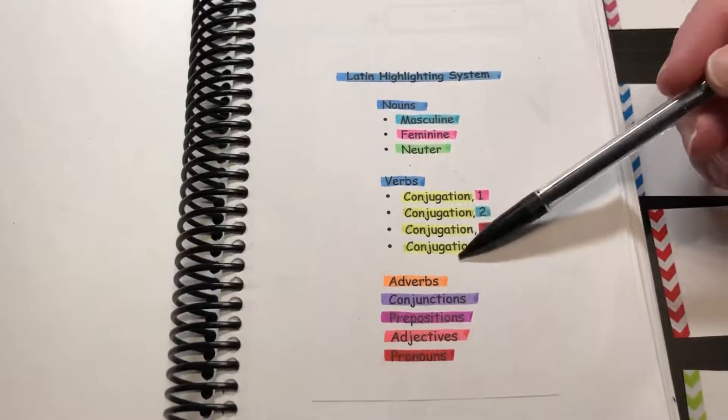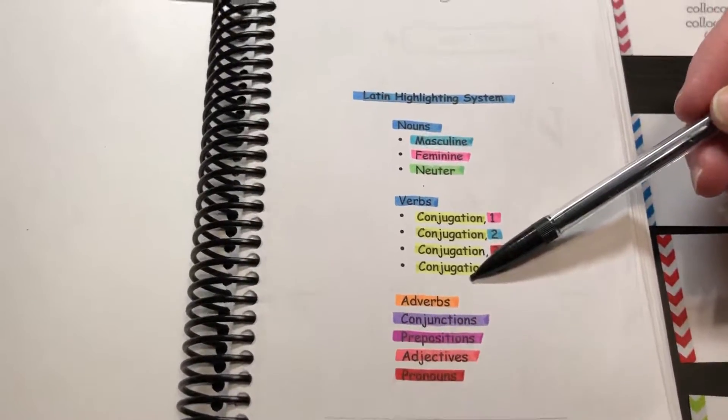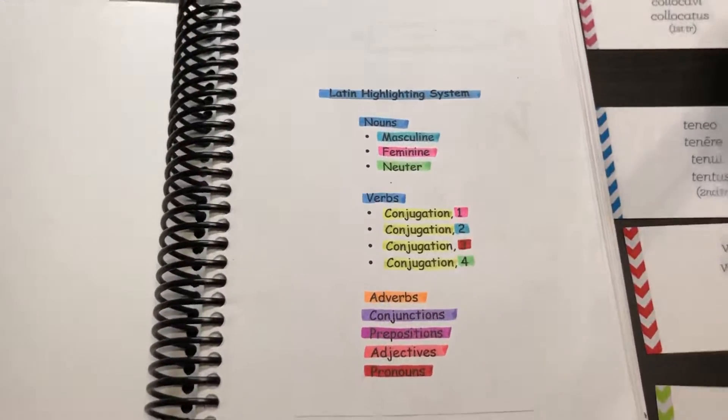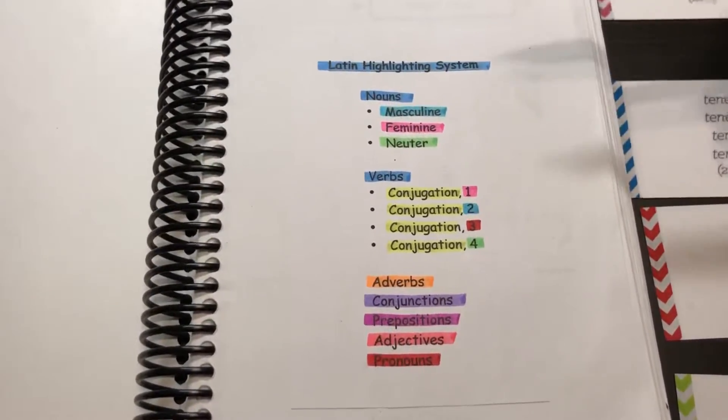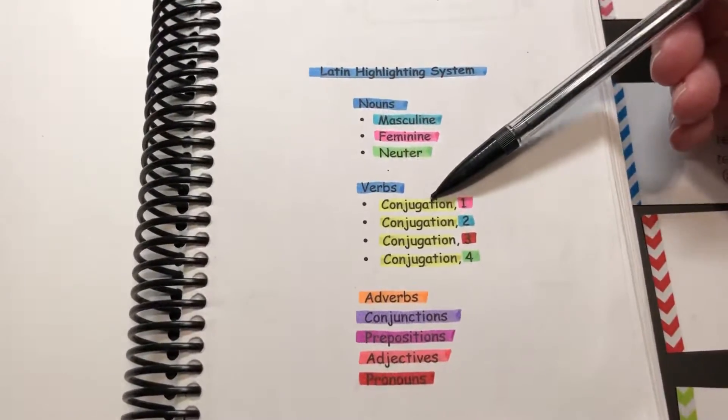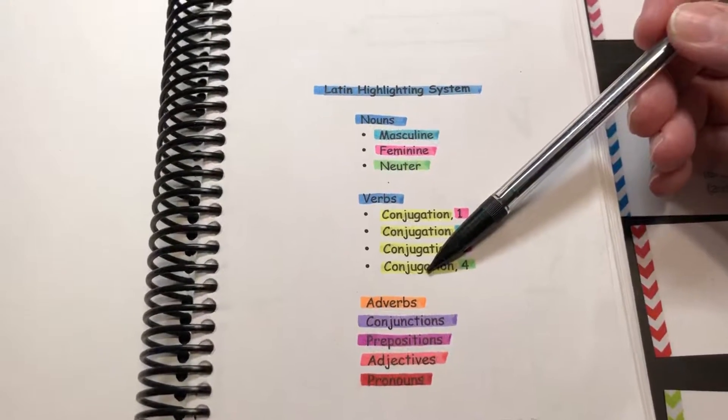The whole system sort of evolved over time. When I got to verbs, again I didn't know about the different conjugations. I just picked yellow because I thought that was a good color to go next.